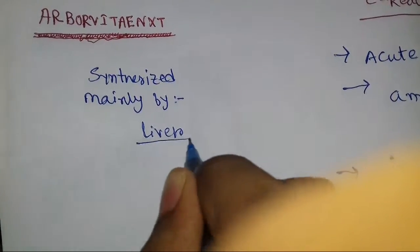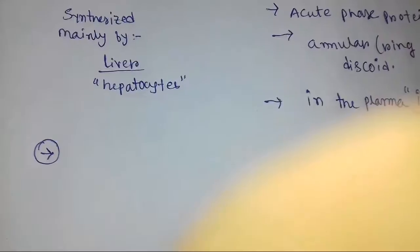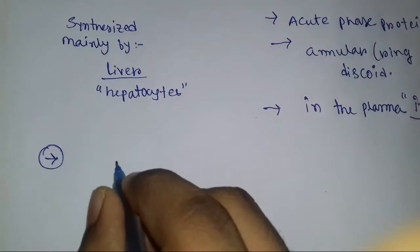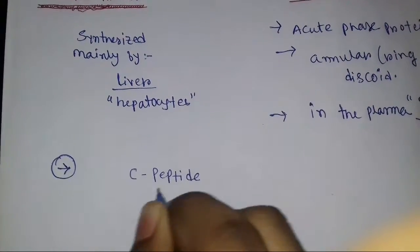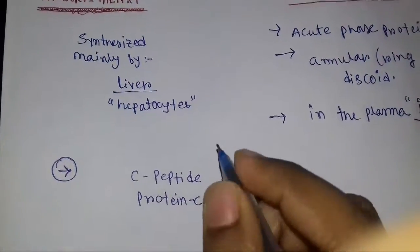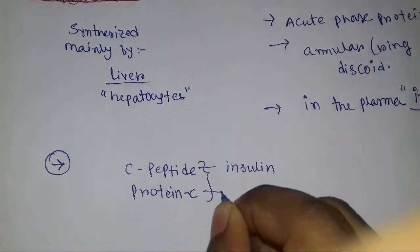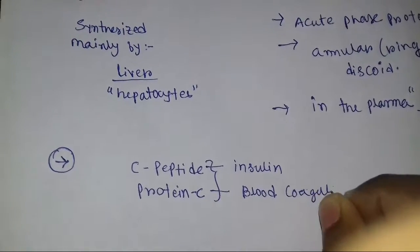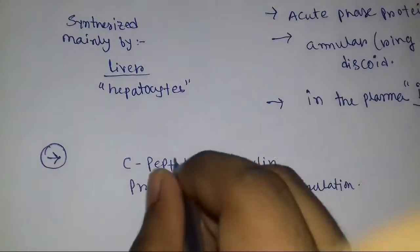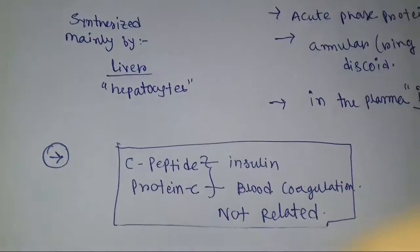C-reactive protein is synthesized mainly by the liver — specifically by the hepatocytes in the liver. It is often confused with C-peptide or protein C, but it is not related to either. C-peptide is related with insulin, and protein C is related with blood coagulation — neither is related to C-reactive protein.